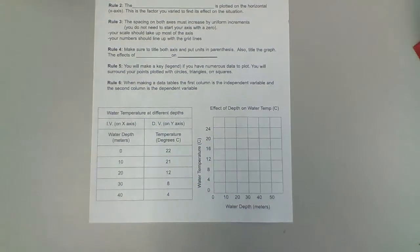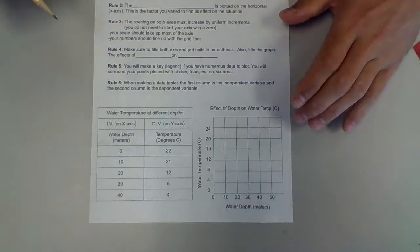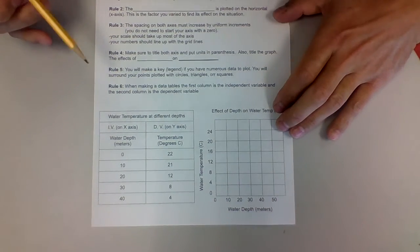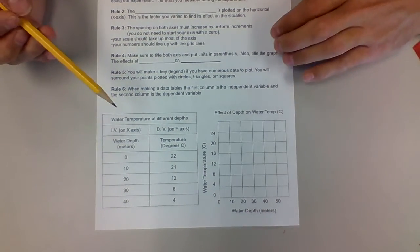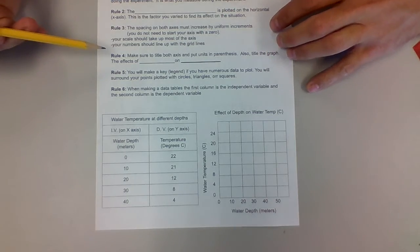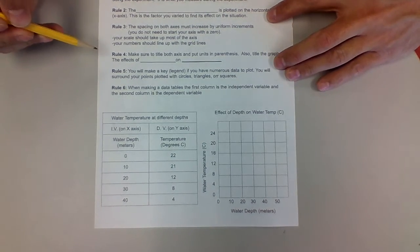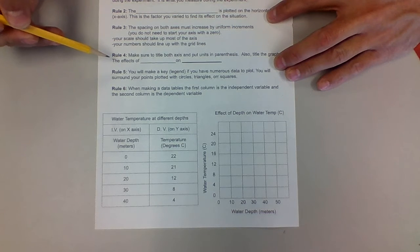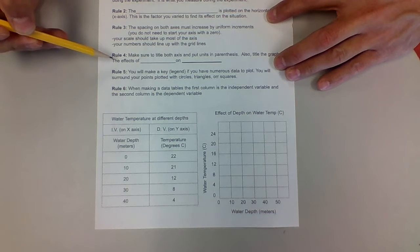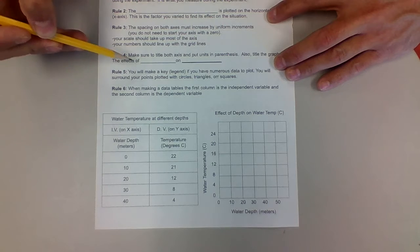All right, welcome back. We're going to finish this off now. One of the things that we need to make sure we cover before we make our graph is making sure we have a proper title. The best way to write a graph title is to write it in the terms 'the effect of blank on blank.'